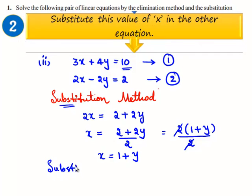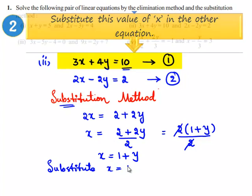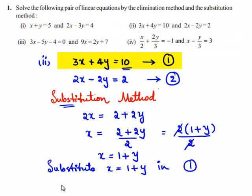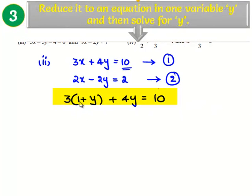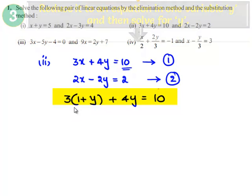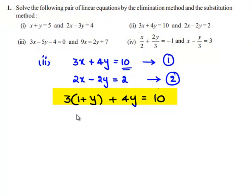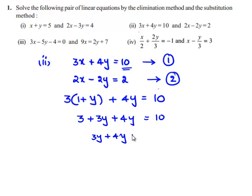Since this is the substitution method, let us substitute x is equal to 1 plus y in equation number 1. So 3 times of 1 plus y plus 4y is equal to 10. This becomes 3 multiplied by 1 is 3, so 3 plus 3y plus 4y is equal to 10. Transposing 3 to the right hand side, we get 3y plus 4y is equal to 10 minus 3.